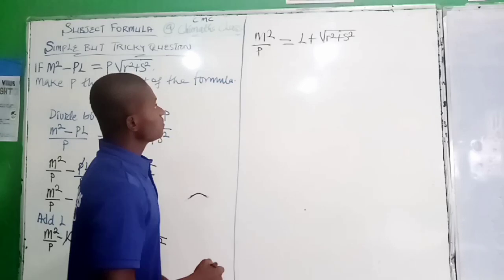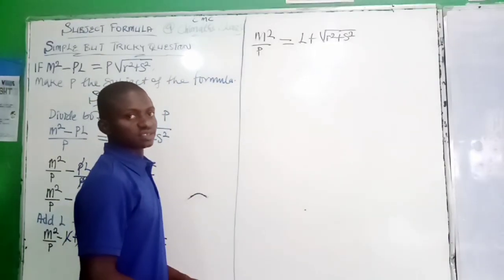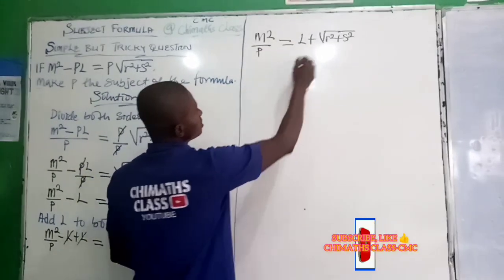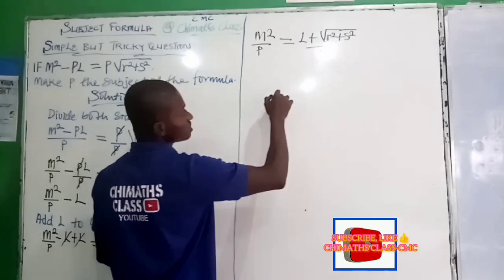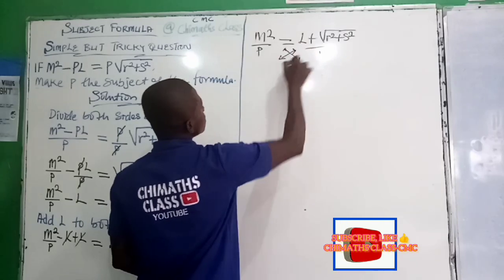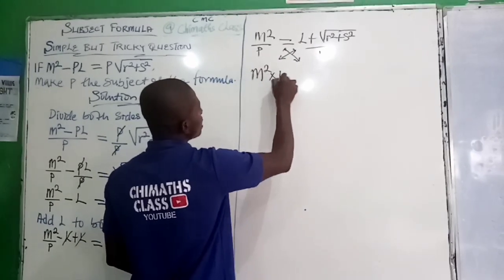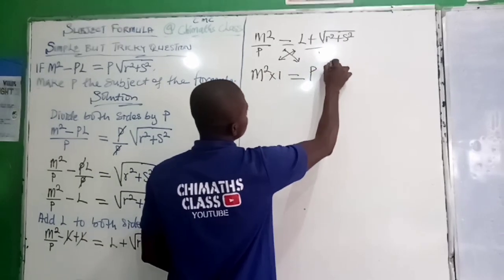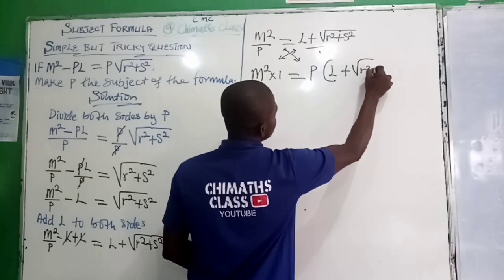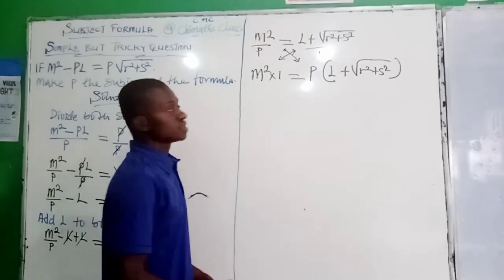Now, we can easily cross-multiply. This is like 1 over 1, so when we cross-multiply, we have something like this: M squared times 1 is equal to P in brackets L plus square root of R squared plus S squared.